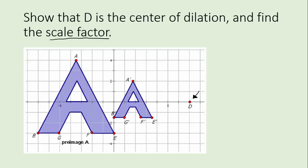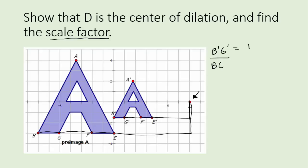There are a few ways to find the scale factor. We could take any point, say B prime, and measure the horizontal and vertical distances over to the center, and compare that with its counterpart. Dividing B prime's distances by B's distances will give the scale factor. Another way is to take any easy linear measurement — for example, the distance from B prime to G prime is one, and the distance from B to G is two. So the scale factor appears to be one half.